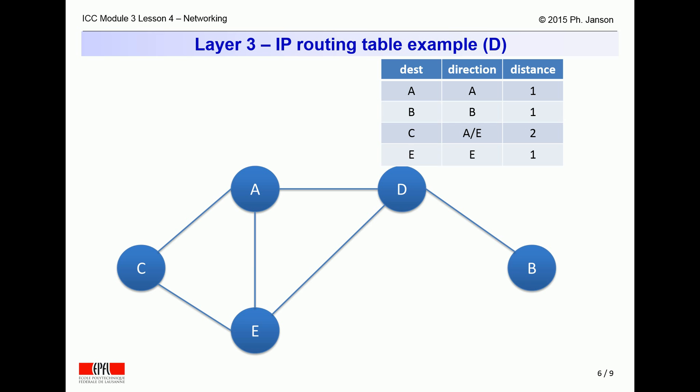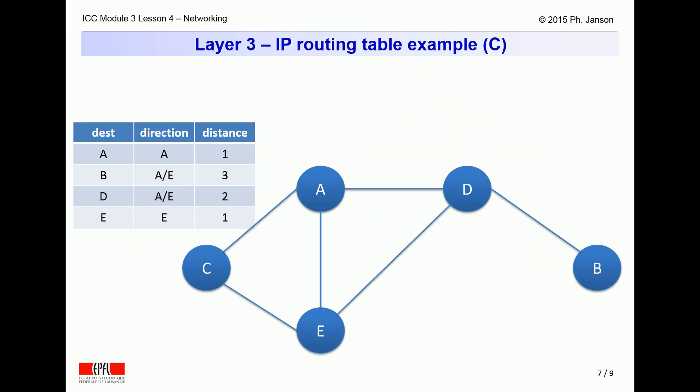Similarly, the routing table at router D would show that node A is directly reachable over one hop, that so is node B, and so is node E, while node C is two hops away reachable over node A, or in fact it could be equally reachable two hops away over node E. At router C, the routing table would indicate that A and E are directly adjacent one hop away, whereas D is two hops away over A or E, and B is even three hops away over A or E, and so on for the other nodes.